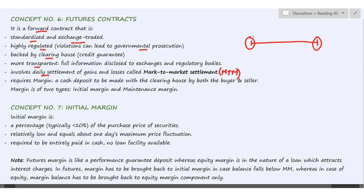In futures contracts, at the time of initiation we have to make a deposit in a margin account. This margin account keeps increasing and decreasing on a daily basis — if there is a gain it is added, if there is a loss it is deducted. There is a cash deposit to be made with the clearing house by both the buyer and the seller. This margin is of two types: initial margin and maintenance margin.